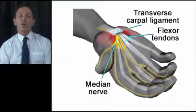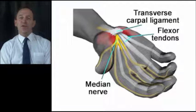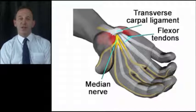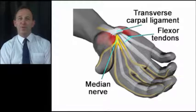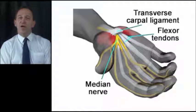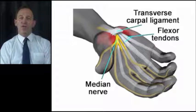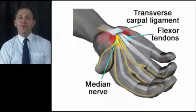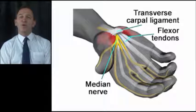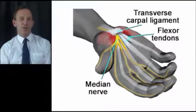Perhaps the commonest problem involving the hand and wrist, apart from OA and RA, is carpal tunnel syndrome. This involves trapping of the median nerve as it passes under the flexor retinaculum over the underside of the wrist. This commonly presents with nighttime pain and numbness within the distribution of the sensory nerve supplied by the median nerve.